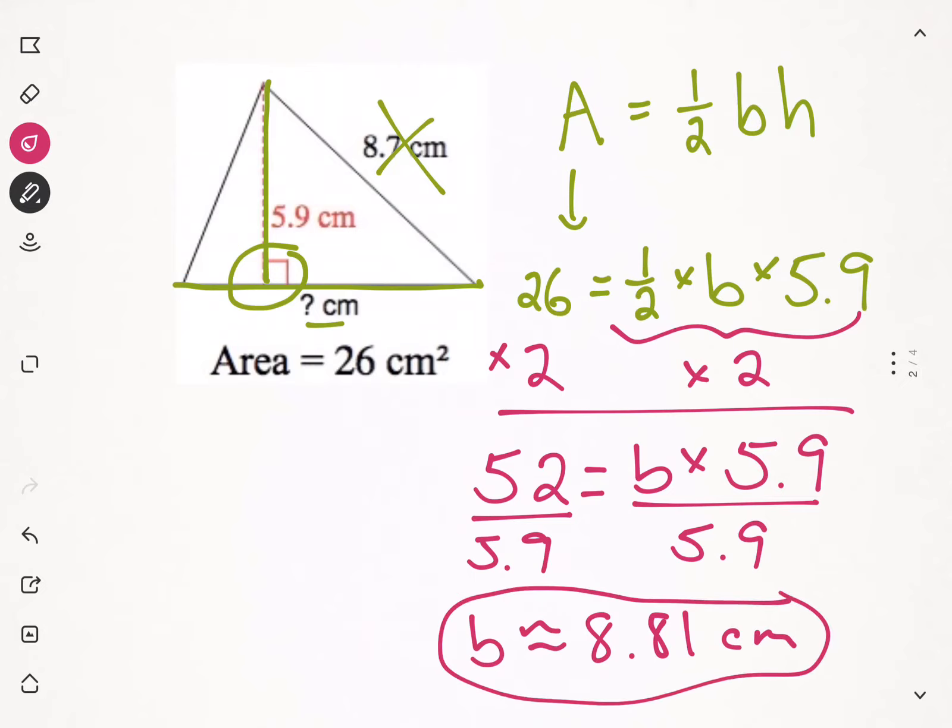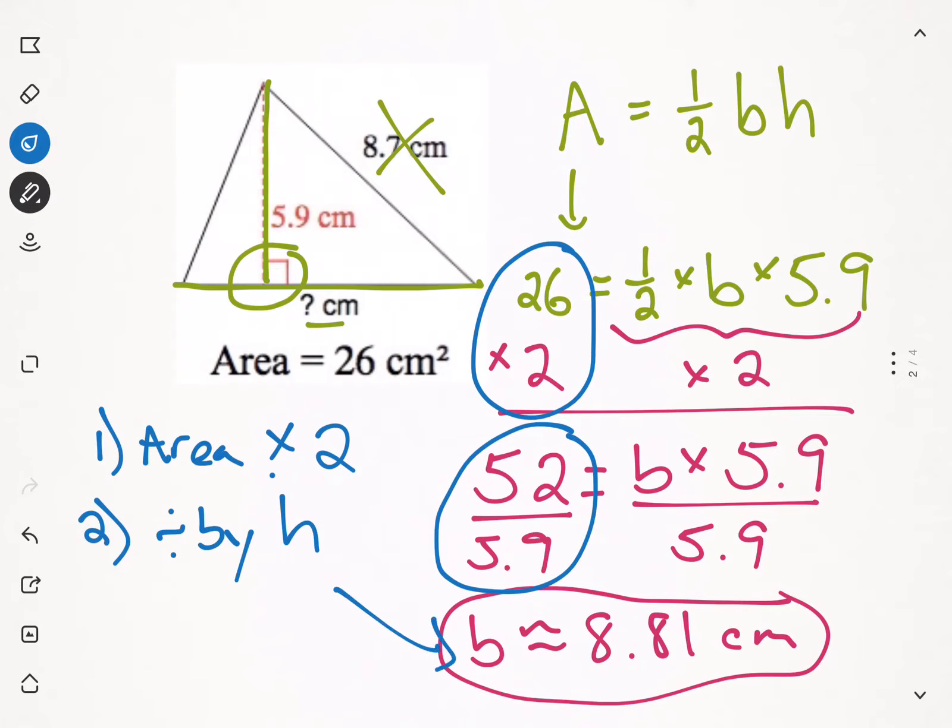So, let's look at what we did, though. Let's make it as simple as possible. Step 1, we multiplied the area by 2. We do area times 2. Step 2, we divided by the height. That's right here. So, you take the area times 2, and then you divide by the height. And that gives you the base.